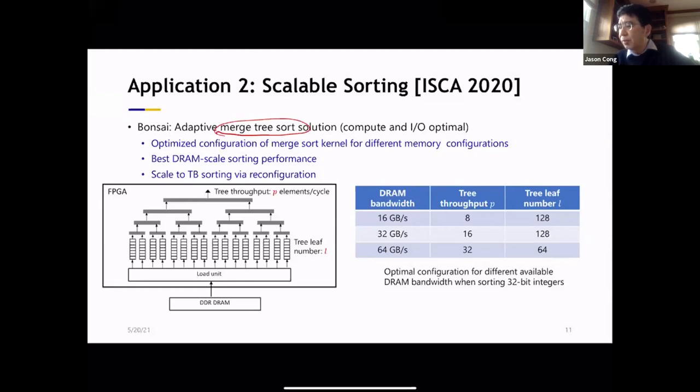So there's two important parameters when you build a merge tree. How many leaves you are going to merge? So that's called L. And also how many elements you produce at the root. So that's the throughput of the tree. These two you can customize. In fact, at every layer of the tree, you can decide what's the throughput you have. And how do I decide? That depends on the data you're going to sort. How large of a data set you're going to sort. And also what's the memory bandwidth for the FPGAs.